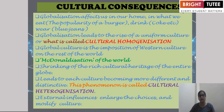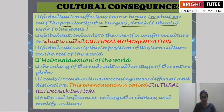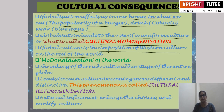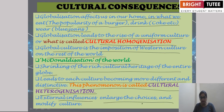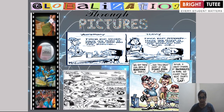There are also cultural consequences of globalization. Globalization affects us in our homes — in what we eat, the popularity of burgers, Coke, blue jeans. Globalization leads to the rise of a uniform culture, called cultural homogenization, and global culture is seen as the imposition of Western culture on the rest of the world. On the contrary, this can also be viewed as an exchange of culture, as Western people are also moving towards adopting our culture. Then the so-called McDonaldization of the world leads to shrinking of the rich cultural heritage of the entire globe, yet also leads to each culture becoming more different and distinctive — a phenomenon called cultural heterogenization. External influences enlarge choices and modify culture.